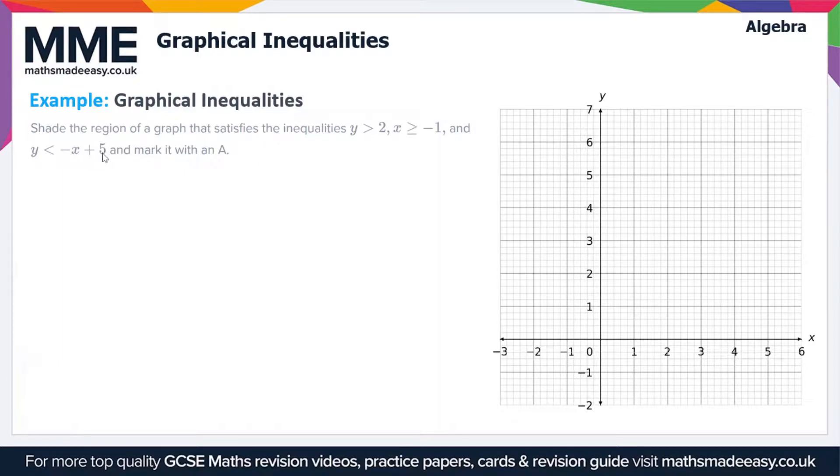Here we're going to go through an example question. We've got this example here: shade the region of a graph that satisfies the inequalities y is greater than 2, x is greater than or equal to minus 1, and y is less than minus x plus 5, and then we've got to mark it with a letter A.